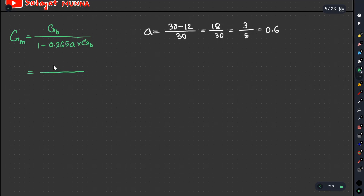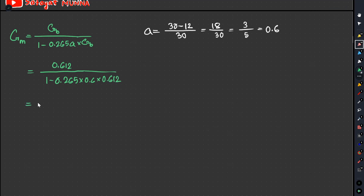Gb is 0.612. The value 1 minus 0.265, air value 0.6, into Gb 0.612. So eta is set up as 0.6779, approximately 0.678.